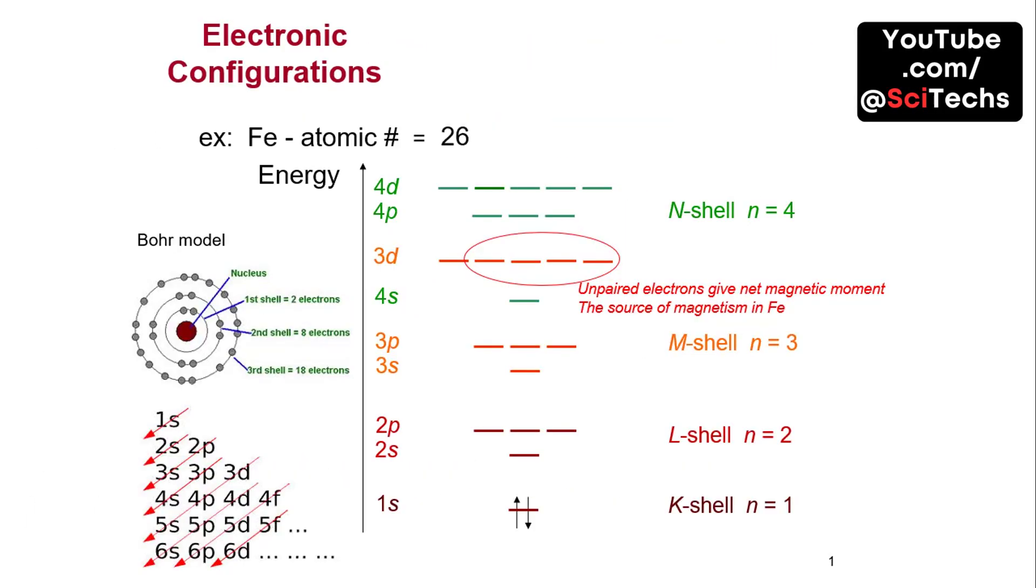Electronic configurations describe the arrangement of electrons in an atom. For example, iron has an atomic number of 26, and its electron configuration is 1s² 2s² 2p⁶ 3s² 3p⁶ 3d⁶ 4s². Unpaired electrons contribute to magnetic properties.